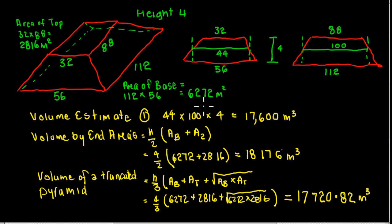Now we could use what's known as the end area formula. And here we just have two end areas, so it's basically the average area times the height divided by two.